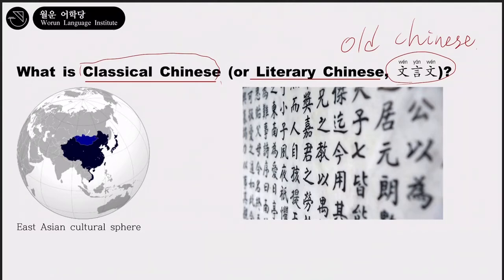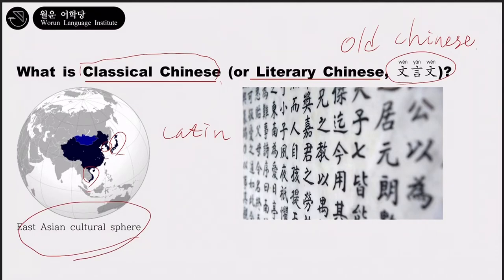Further, just like Latin was an international language in medieval Europe — countries such as England, Germany, etc. — East Asian countries including Korea, Japan, and Vietnam had documented their history in classical Chinese because they didn't have their own writing system until the early modern period. However, it doesn't mean these countries were part of Chinese territory. They were just part of the East Asian cultural sphere.